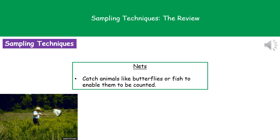The third technique is nets. If we want to catch animals like fish or butterflies, we use a sweep net and pass it through the environment to collect the organisms, then count them. We generally use a net when organisms are hard to count because they're liable to move away quickly. By using the net we can catch them, count them easily, and then release them back into their environment unharmed.